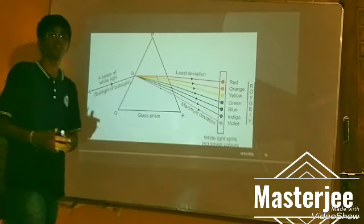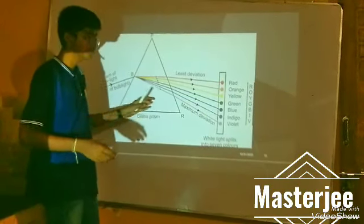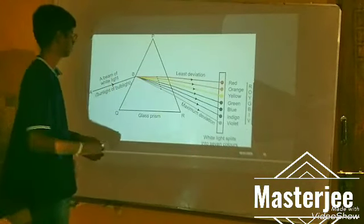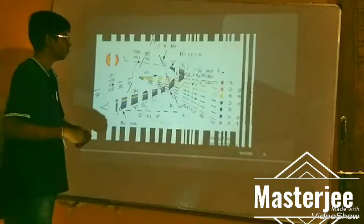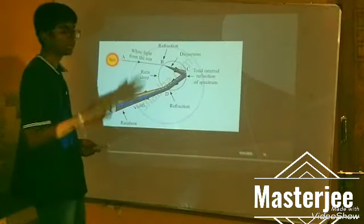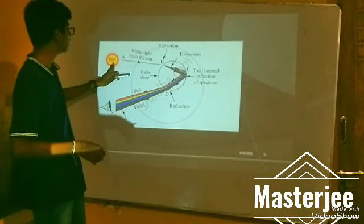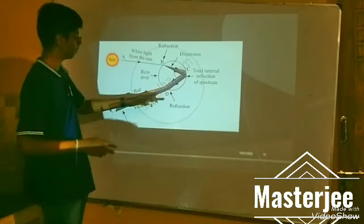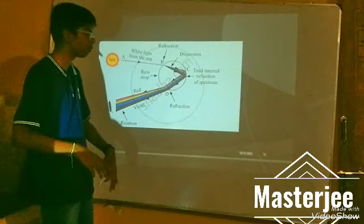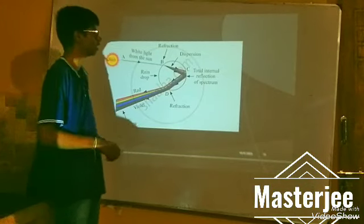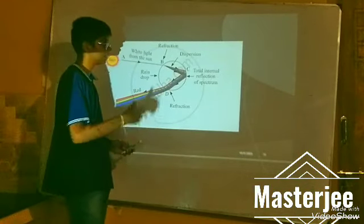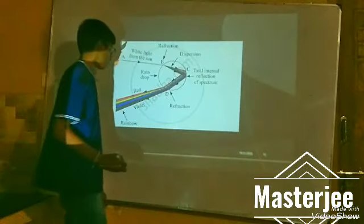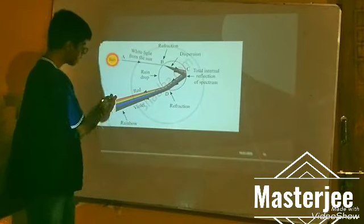This is the formation of VIBGYOR — the rainbow. In rainbow formation, sunlight reflects inside water droplets. The light undergoes total internal reflection inside the water droplet, producing the rainbow effect.